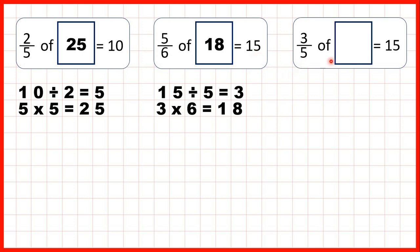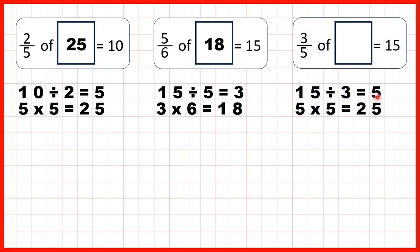Finally, three-fifths of what equals 15? It's a missing number problem, so instead of dividing by the denominator, we divide by the numerator: 15 divided by 3 is 5. Then we take that 5 and multiply by the denominator to give us a total quantity of 25. We can check: 25 divided by 5 is 5, times 3 is 15.